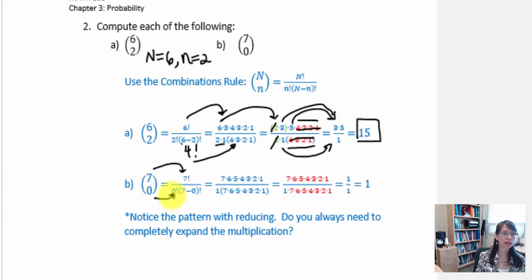Remember that 0 factorial is worth 1. So that is a key element right there. 7 factorial breaks down as 7 times 6 times 5 all the way down to times 1. 7 minus 0 is 7 factorial and I have expanded that.